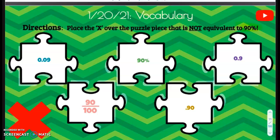The first one we have over here is 0.09. This is nine hundredths, so that means nine out of 100. Is that 90%? No, that's going to be 9%, not 90%. Let's double check to make sure the rest are correct.